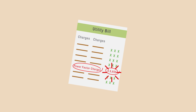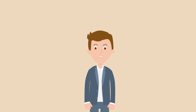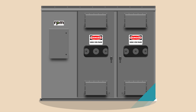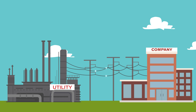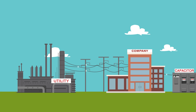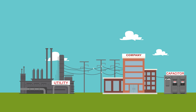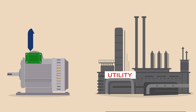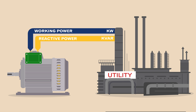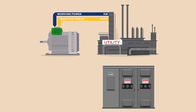How do you get rid of the charge? By installing power factor correction capacitors. These temporary storage units provide reactive power to your motor instead of receiving it from the utility. Both kW and kVAR come from the utility, but when a capacitor is installed in your facility, it replaces the reactive power supplied by the utility.